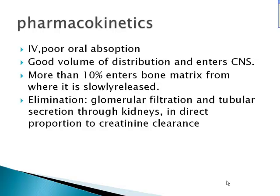Foscarnet is administered intravenously due to poor oral absorption. It has a good volume of distribution and can enter the CNS. More than 10% enters bone matrix, from where it is very slowly released. Elimination occurs through the kidneys via glomerular filtration or tubular secretion.